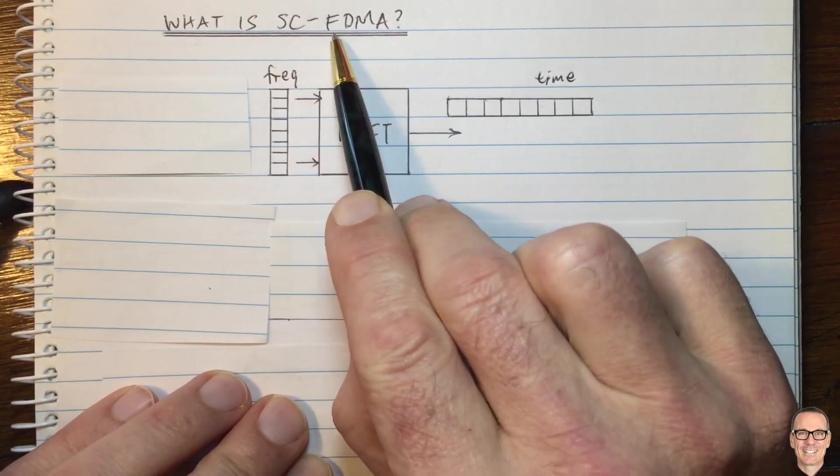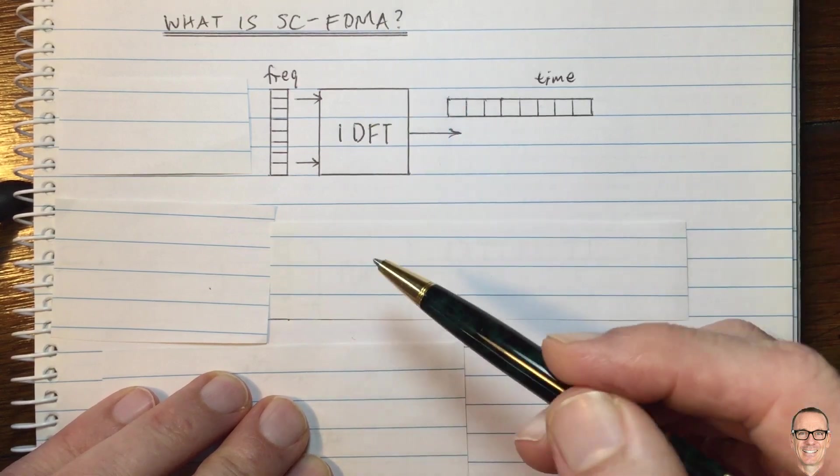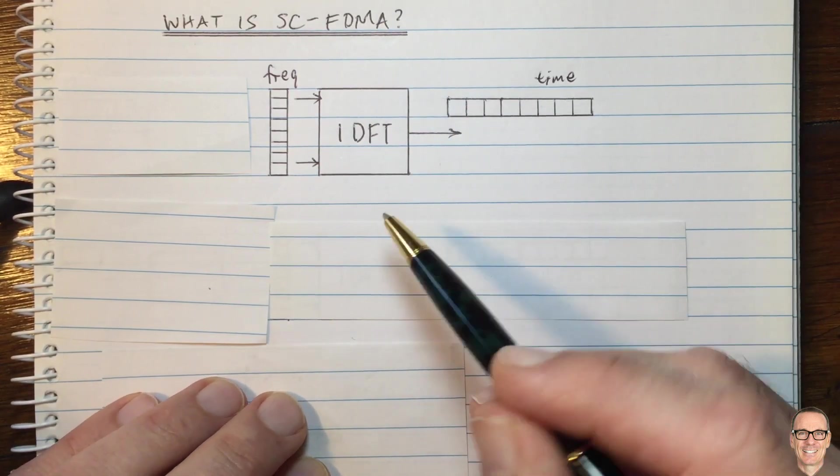What is single-carrier frequency domain multiple access? Why is it used in the uplink of 4G mobile communication systems?